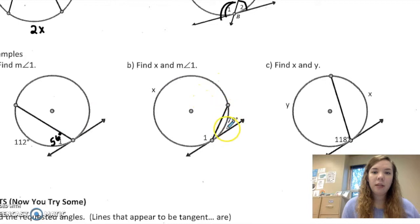Here, if this piece is 78, then the rest of this is 282. So x is 282 and angle 1 is half of that, or 141.